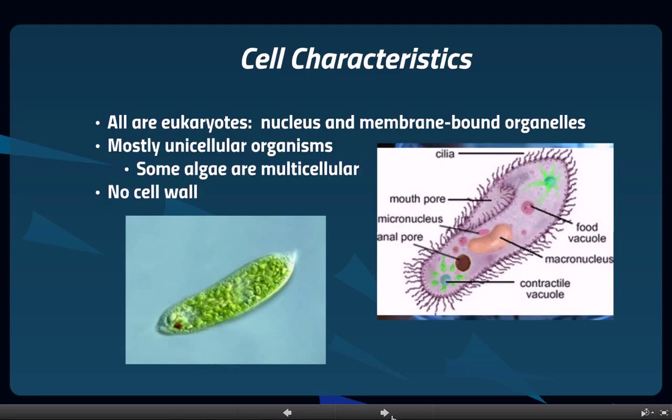Most protists are unicellular organisms. Unicellular means they're made of one independent cell, like our picture on the left. Some algae forms of protists are multicellular, but they're not multicellular like we are — having tissues and organs and things like that. They just happen to get in big groups.